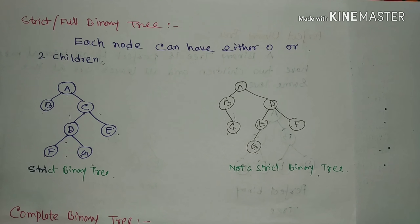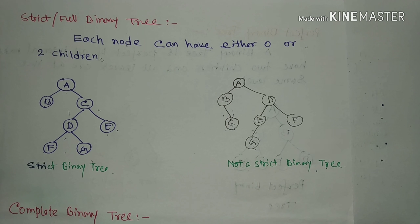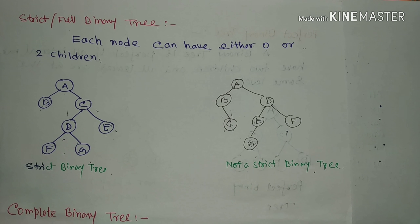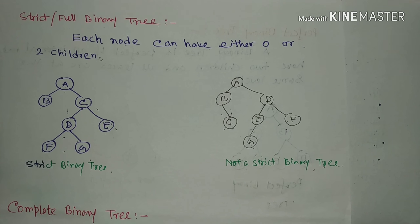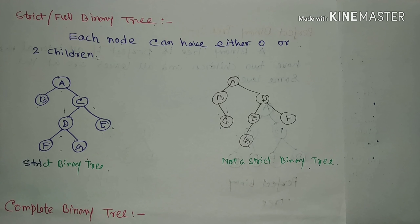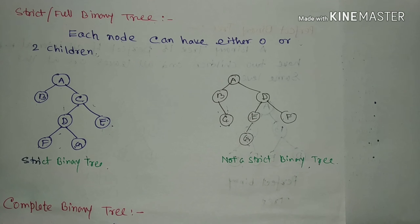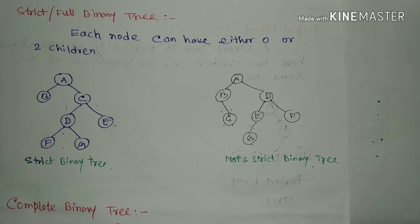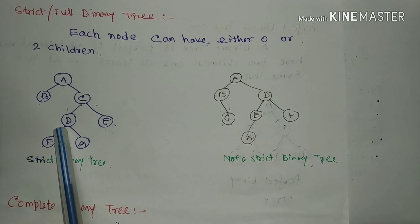Hello friends, welcome to SQ Learning Temple. Today we revisit strict, complete, and perfect binary trees. First is strict or full binary tree. In a strict or full binary tree, each node can have either zero or two children.